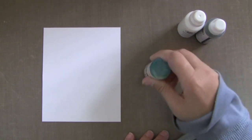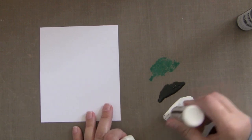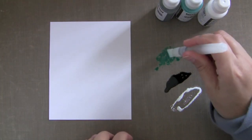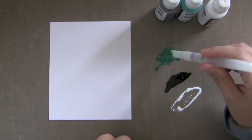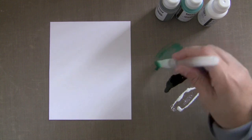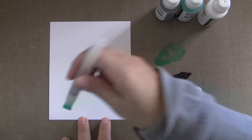So to start off I'm just going to tap some of each dauber on a non-stick craft sheet. You can use an acrylic block for this if you don't have a craft sheet. And then I'm going to squeeze some of the water from the water brush into the color and dilute it a little bit. And then really load my brush up with the color.